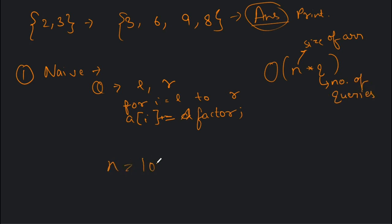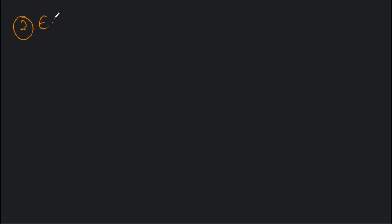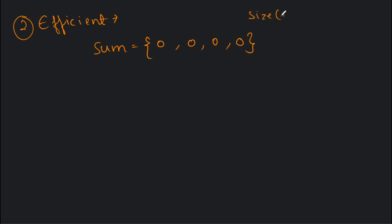If n and q are very large, we get a huge time complexity which is not viable. So let's see an efficient algorithm. We create an array called sum and initialize it with zeros — four zeros, since the size of our array is four: [1, 2, 3, 4]. We can now start looking at the queries.